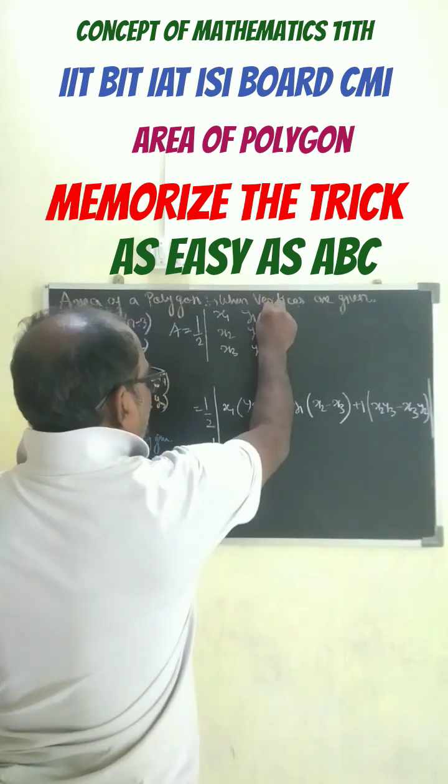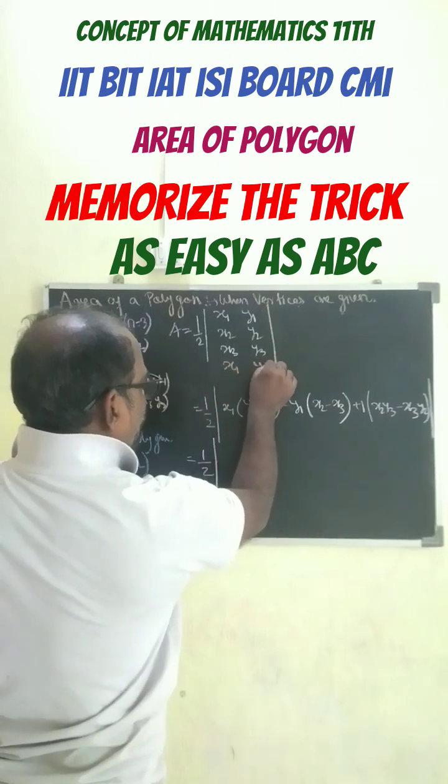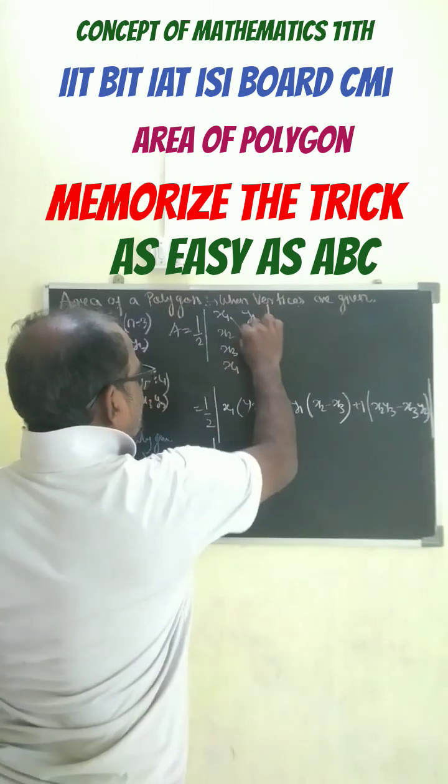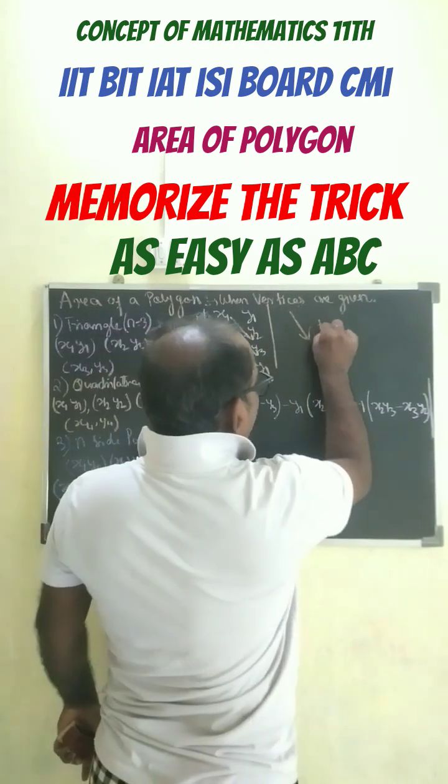You have to write this one and write down here again x1, y1. Now go with this direction, in this way, go this direction. When you go with this direction, put positive.